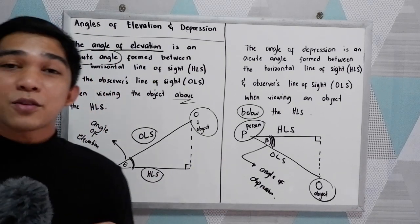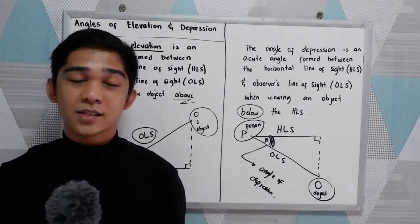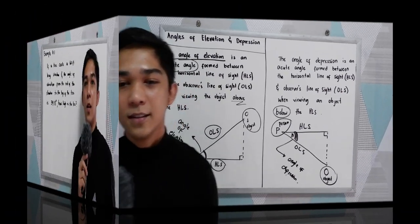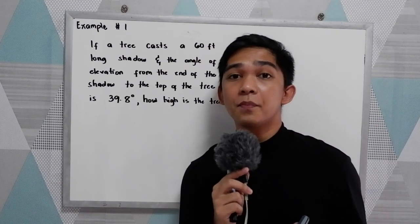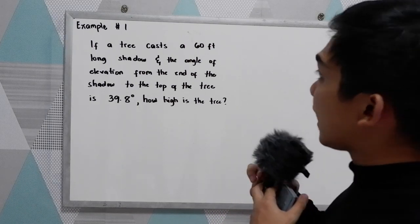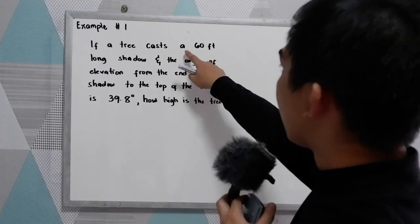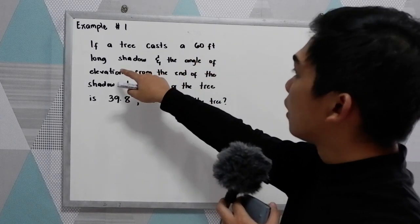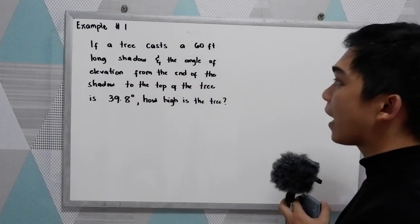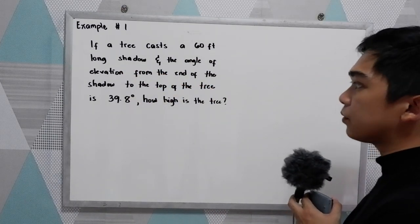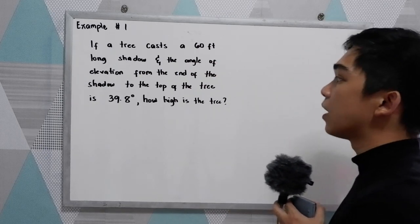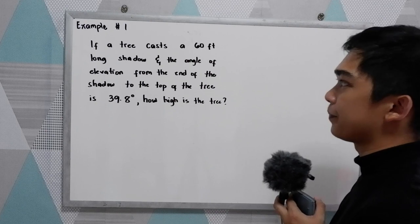Now let's try to solve some problems regarding angles of elevation and depression. Problem number one: if a tree casts a 60 feet long shadow and the angle of elevation from the end of the shadow to the top of the tree is 39.8 degrees, how high is the tree?